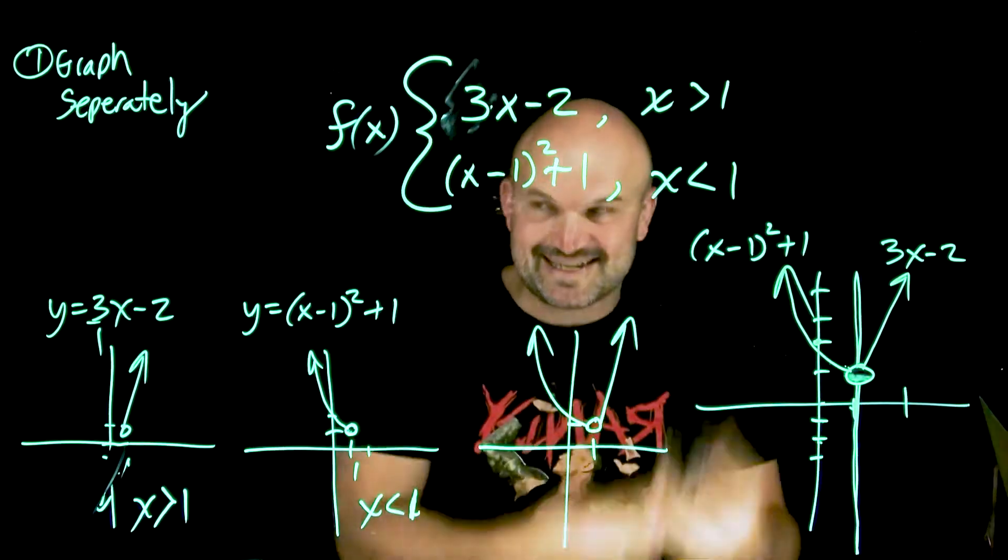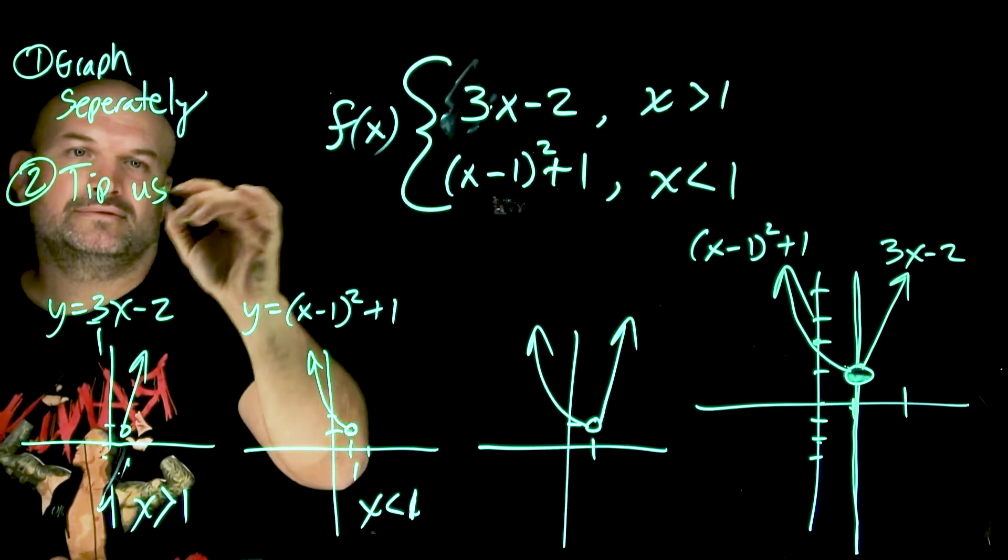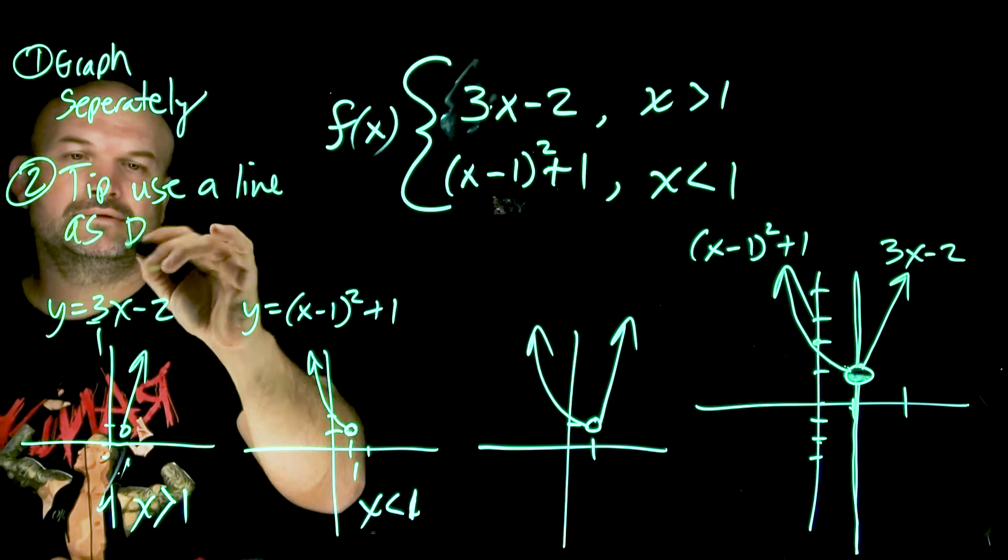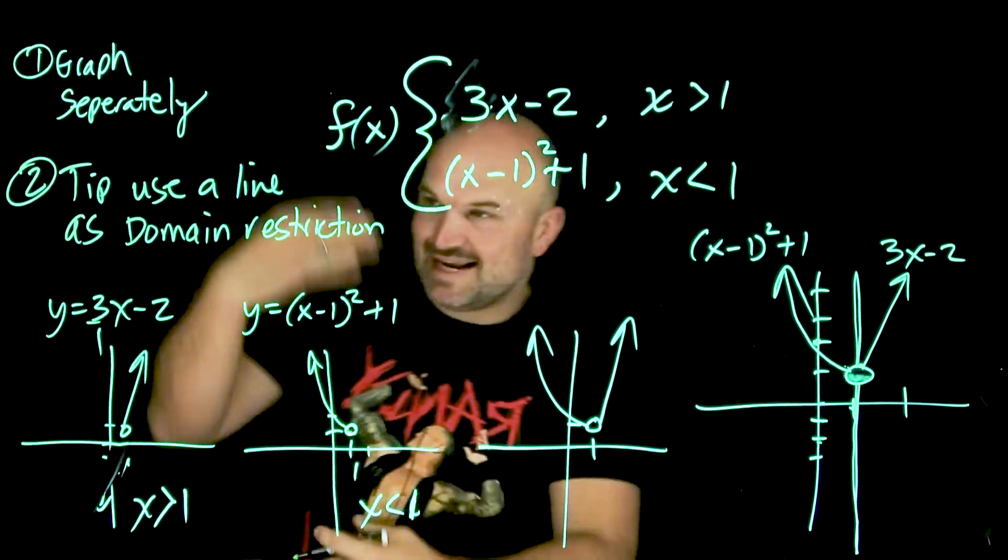So you can see these graphs are exactly the same. And I forgot to write that tip. The second tip is to use a line as a domain restriction.